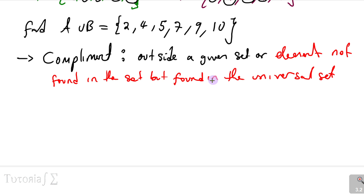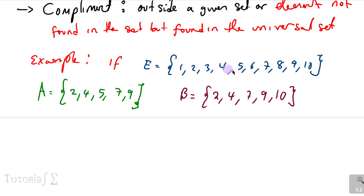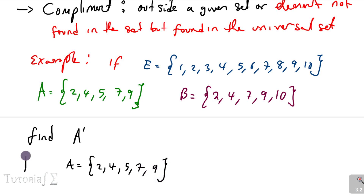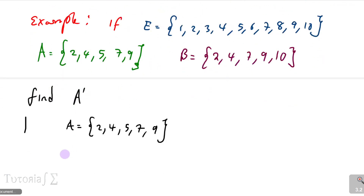Using the same example, if E is the universal set, A is {2,4,5,7,9}, and B is {2,4,7,9,10}, you are asked to find A complement. The slash notation indicates complement. A complement requires finding the elements not in A but found in the universal set.